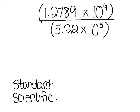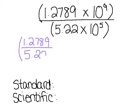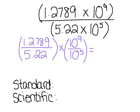Pause the video and try this next problem on your own. First you want to group: put your numbers together — 1.2789 divided by 5.22 — and put your exponents together: 10 to the 9th divided by 10 to the 5th. Dividing the numbers, I get 0.245, and keeping the base and subtracting the exponents gives times 10 to the 4th.